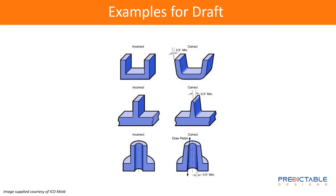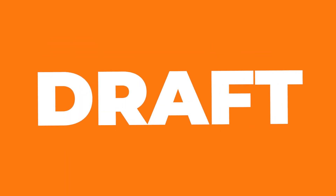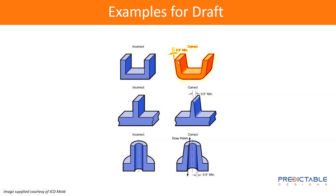One of the first and most basic things you have to take care of is something called draft. It's essentially where you add an angle to any of the walls that are parallel to the direction that the molds pull apart. Because you've got a surface parallel to the direction of pull, the plastic wants to scrape along the mold — it can damage the part and makes it really difficult to remove. What you do is design so that there are angles to the walls of a few degrees, and then that makes the part much easier to remove from the mold.